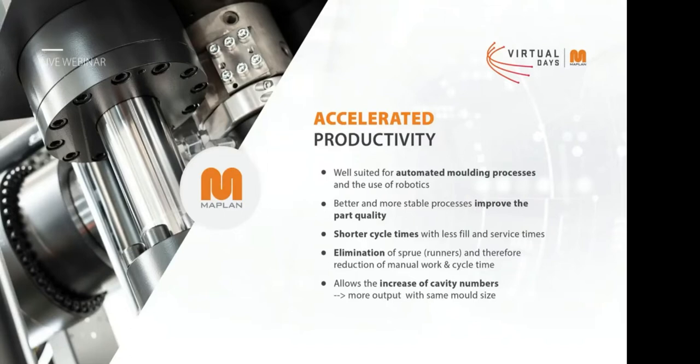In many cases we can eliminate the complete runner system. With a cold runner block with open nozzles we can eliminate the main section of the runner, leaving only a small runner on a few parts. We also have the possibility to increase the cavity number by the same mold size. For example, a mold of approximately 500 by 500mm will accommodate more cavities in a cold runner concept than in a hot runner mold.